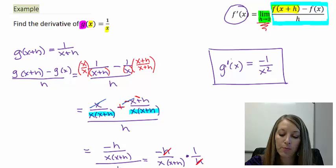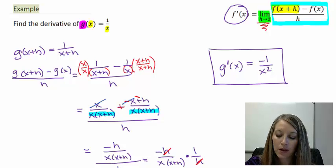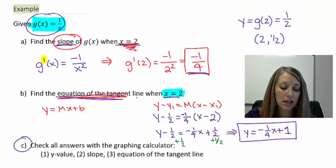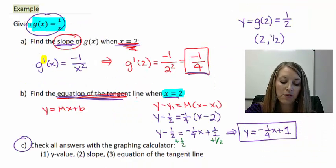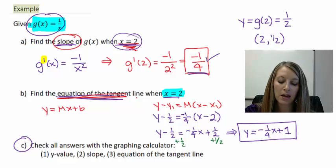That gave us g prime of x equals negative 1 over x squared. Then we used that to give us the slope at a specific point of x equals 2, and we came up with the slope of negative 1 fourth.